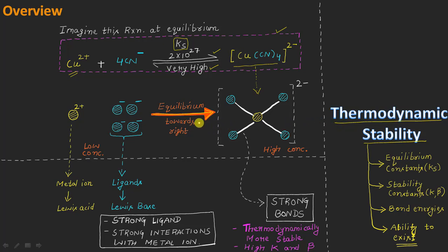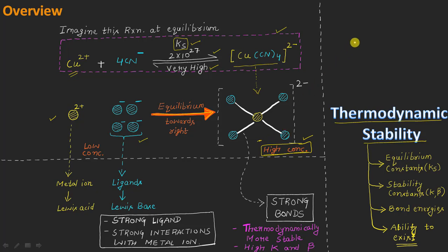In this equilibrium, we have three different kinds of species: the first is the copper ions, the second is the cyanide ions, and the third is this complex. The value of the equilibrium constant is very high and the reaction is favored in the forward direction, resulting in the formation of this complex in very high concentrations. In a beaker where this equilibrium is occurring, the concentration of copper ions and cyanide ions will be low.